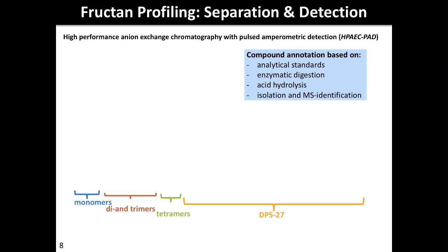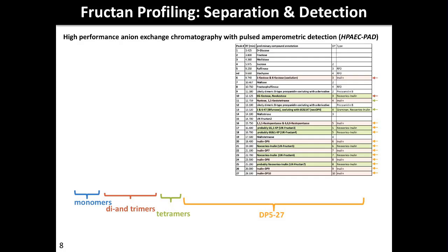We acquired the fructan profiles using high-performance anion exchange chromatography coupled to pulsed amperometric detection. Unfortunately, the chromatograms are not displaying correctly in this presentation. This technique allows for separation of the different polymeric degree-of-polymerization stages, and using a number of different analytical means, we were able to annotate 27 individual compounds in our chromatograms, most of them being fructans.